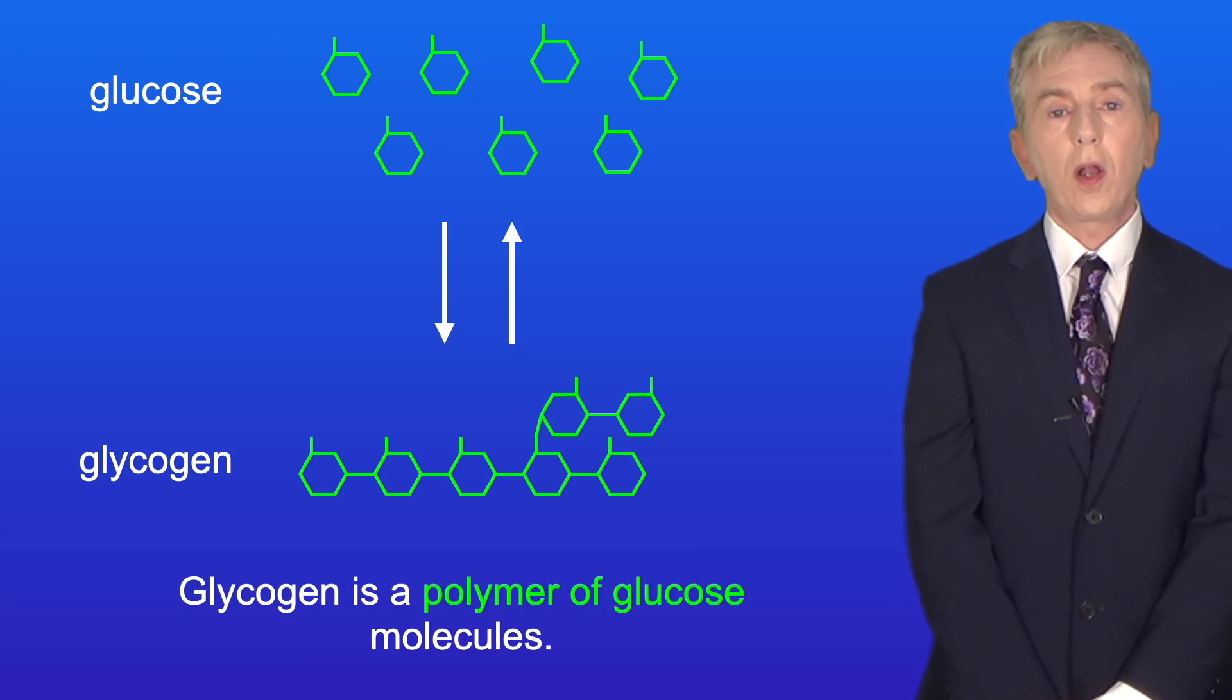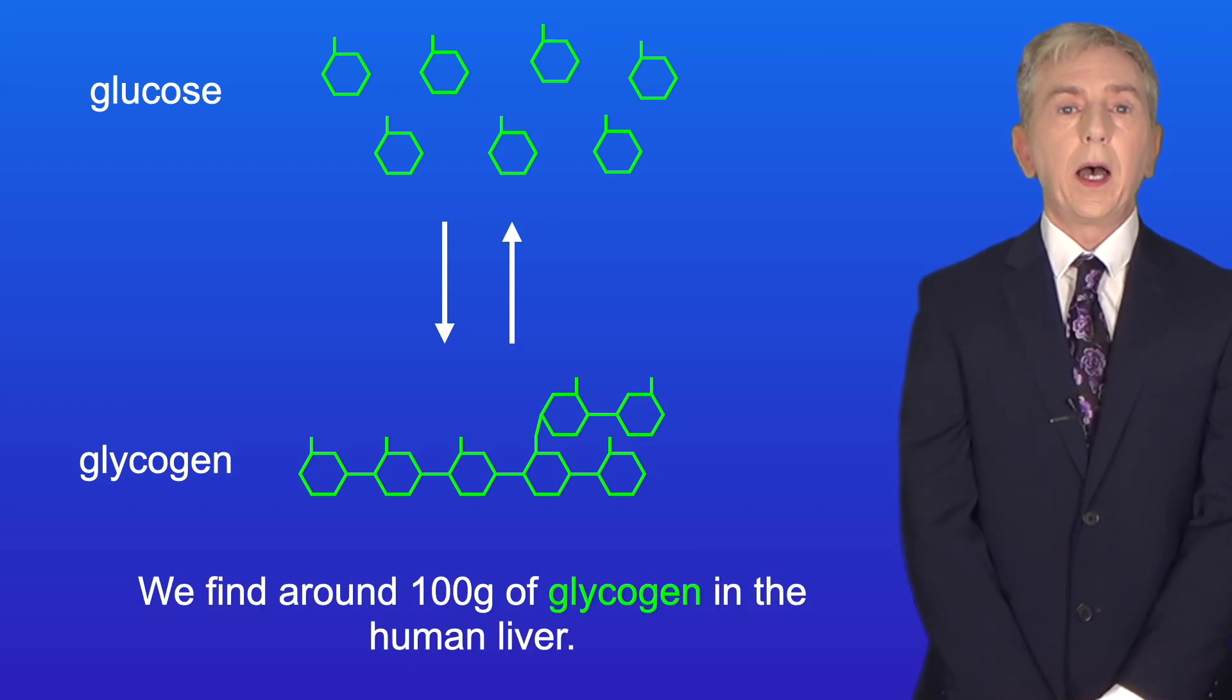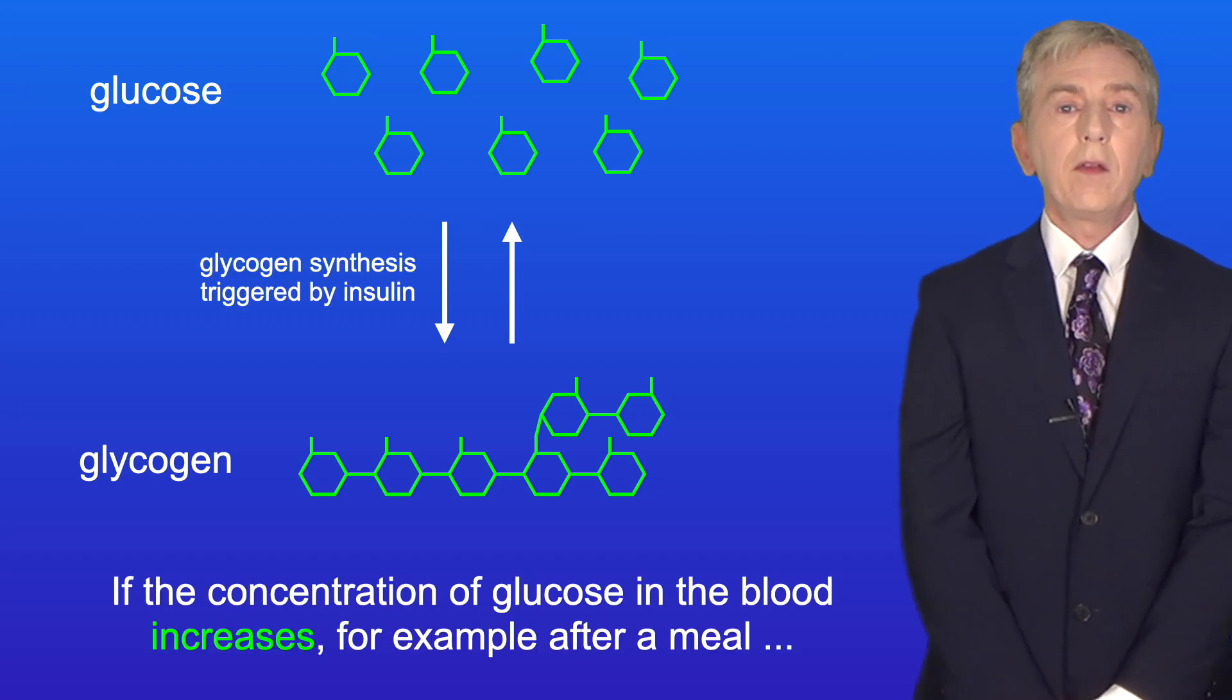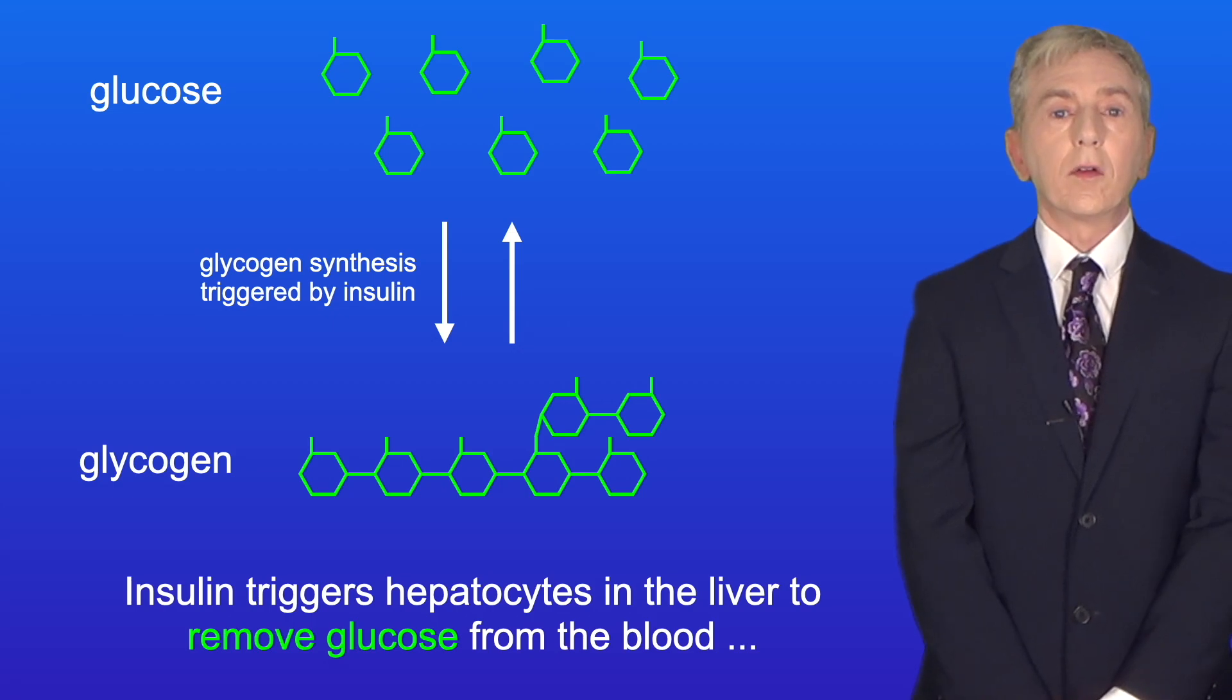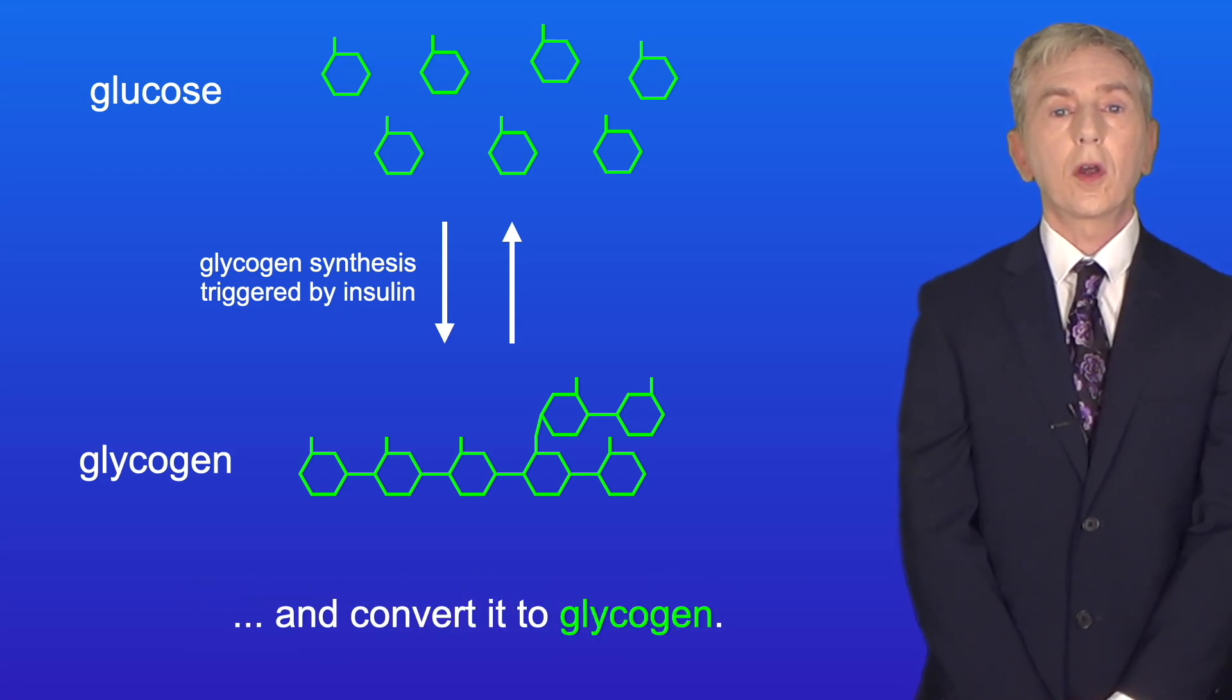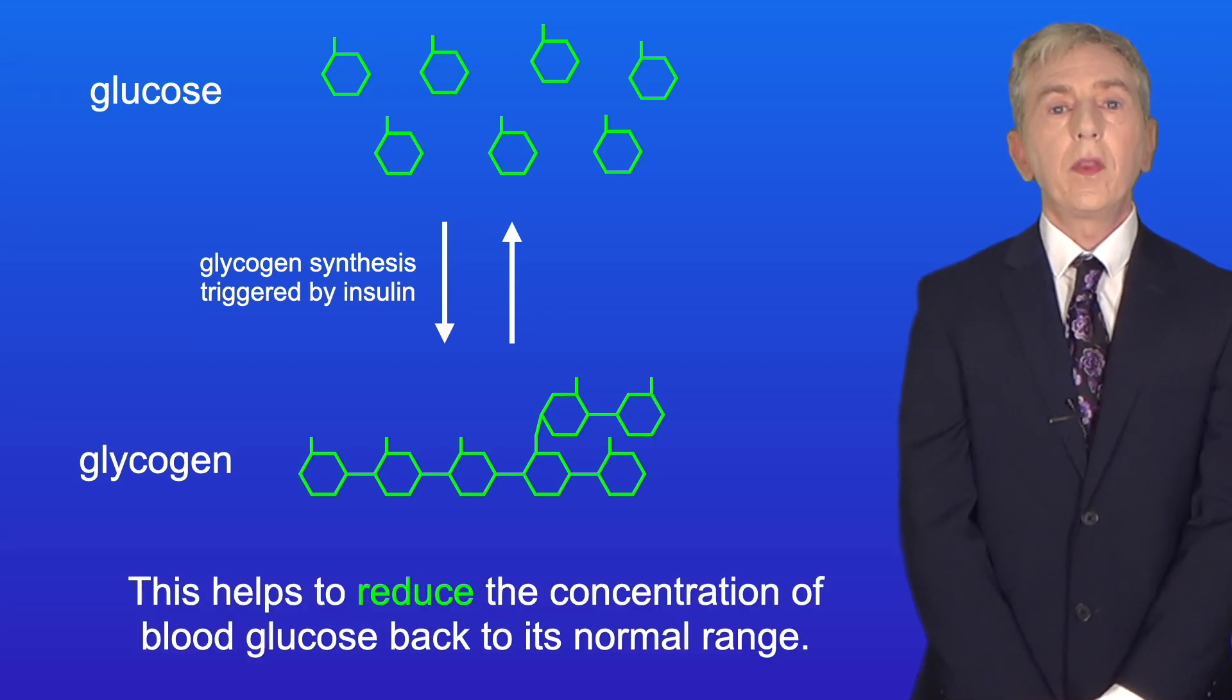Glycogen is a polymer of glucose molecules, and we find around 100 grams of glycogen in the human liver. If the concentration of glucose in the blood increases, for example after a meal, then the pancreas releases the hormone insulin. Insulin triggers hepatocytes in the liver to remove glucose from the blood and convert it to glycogen, and this helps to reduce the concentration of blood glucose back to its normal range.